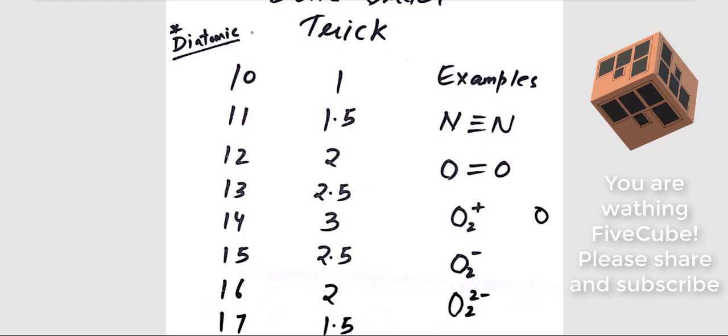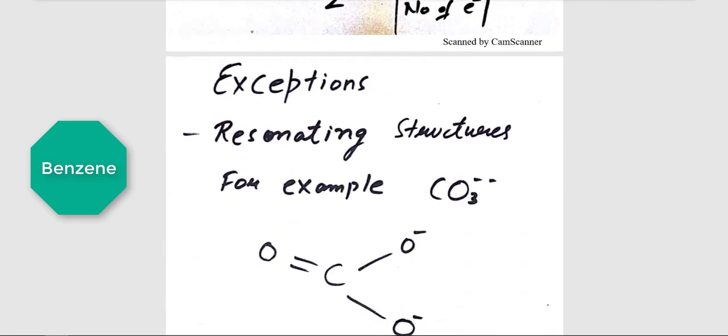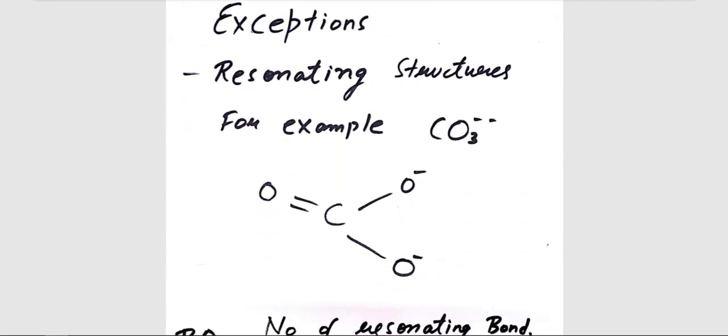The trick I discussed in my previous video is valid only for diatomic species like N2, O2, etc. But what about species like CO2 or benzene, which have resonance? For those, we have this video. All you have to do is watch this video complete.